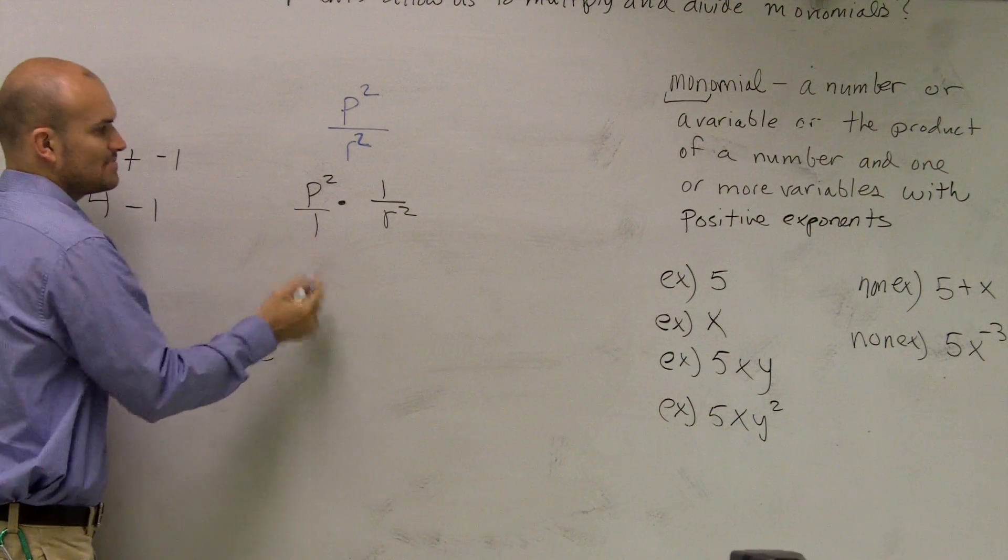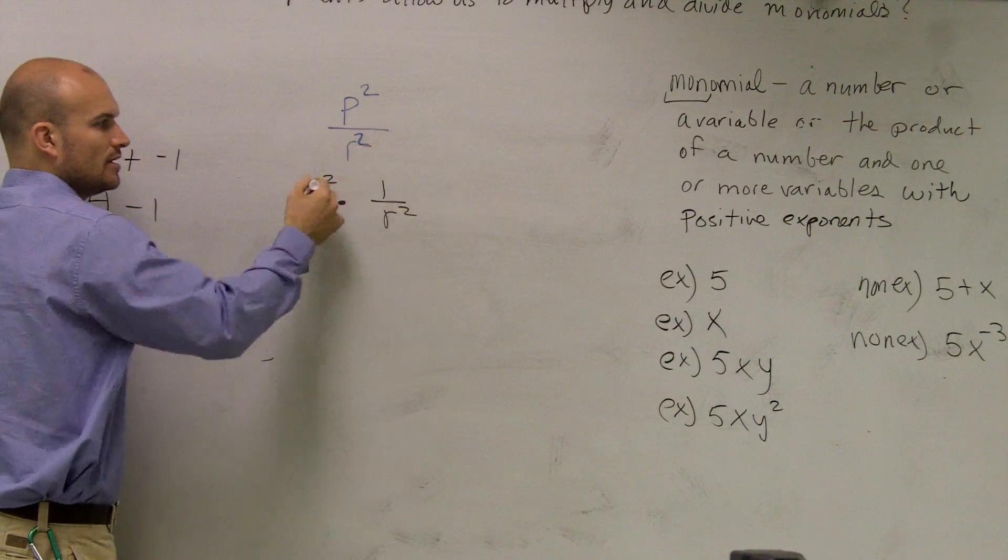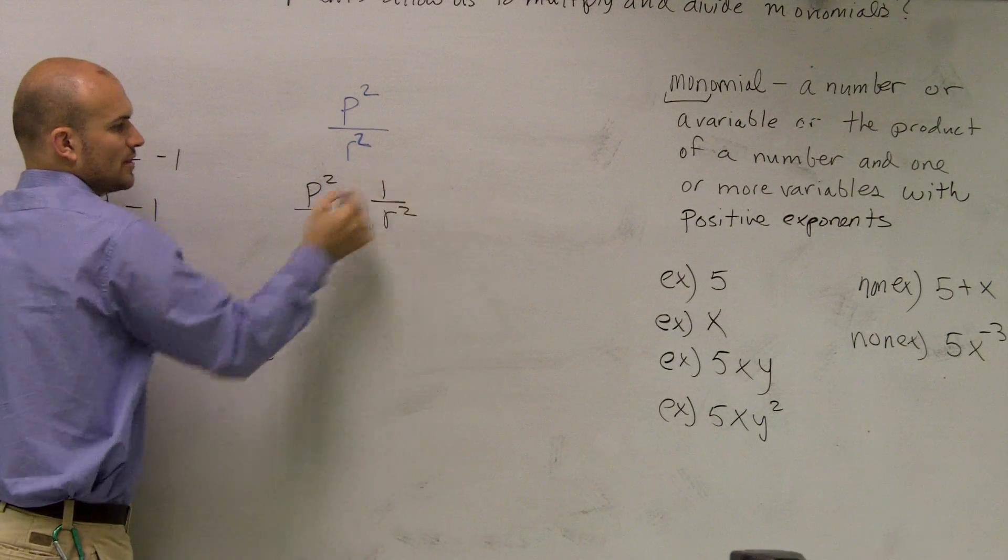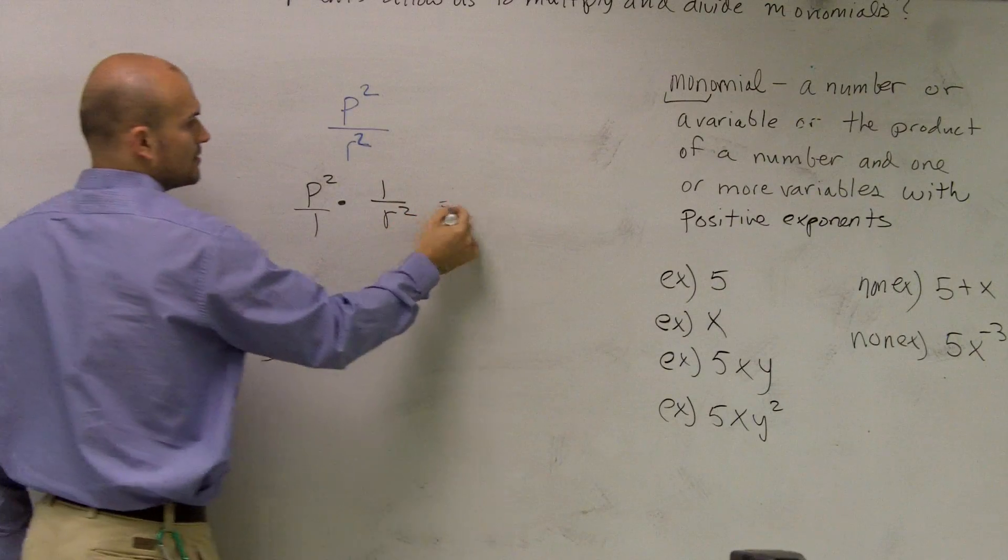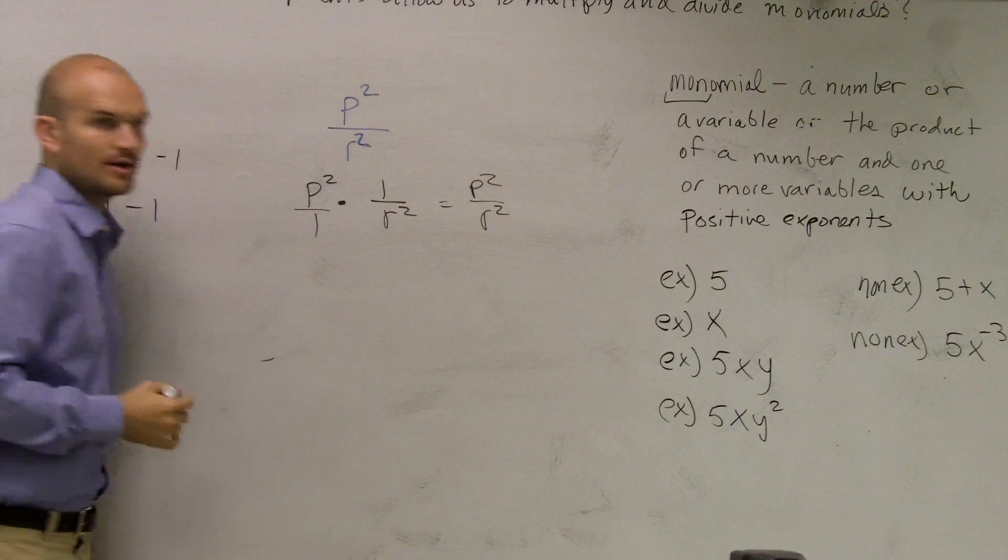Because pretend, let's say we can put this back over 1. If we were multiplying these over, p squared times 1 would be p squared. 1 times r squared would be r squared.